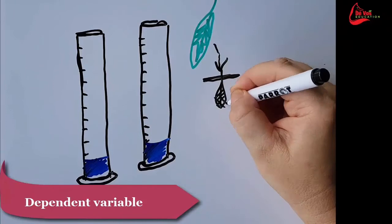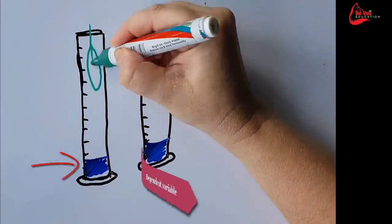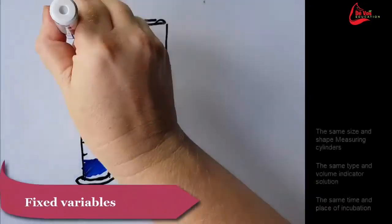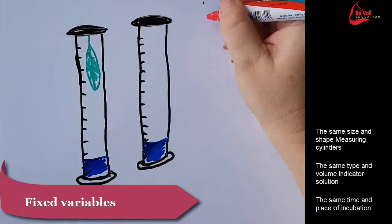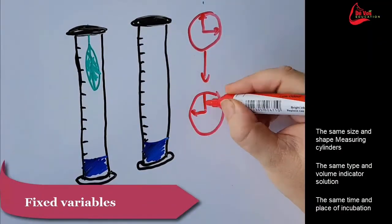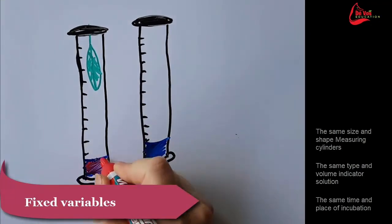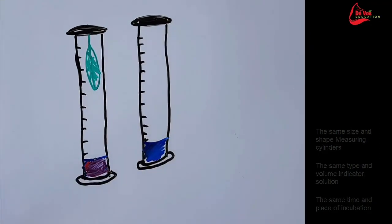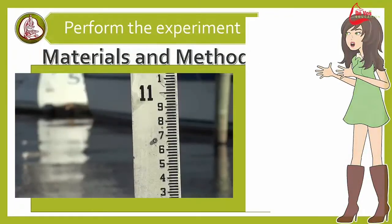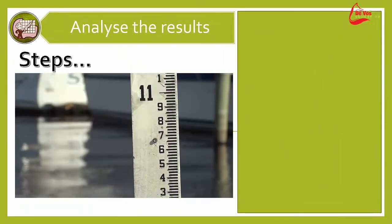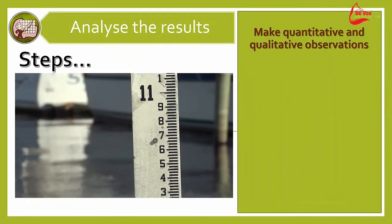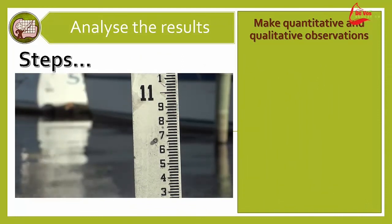To make the experiment valid, we need to fix some of our variables, such as we need to use the same size and shape measuring cylinder, the same type and volume of solution, and incubate it for the same time period. This concludes the planning phase of your experiment.